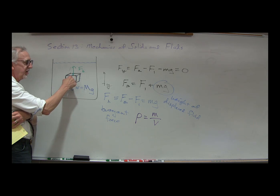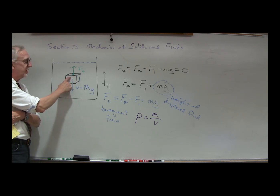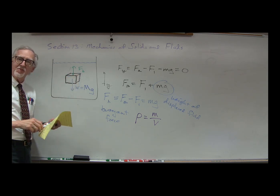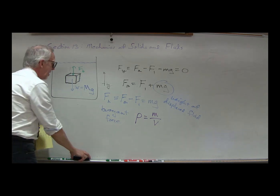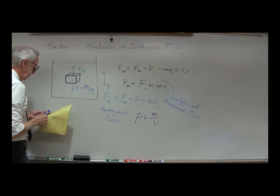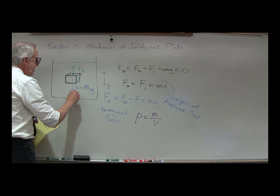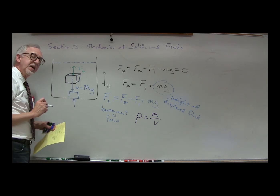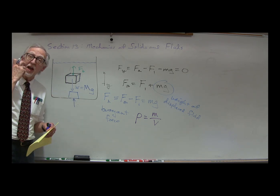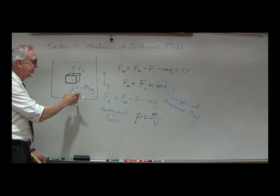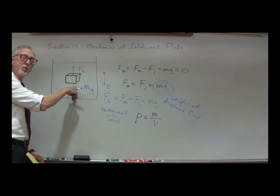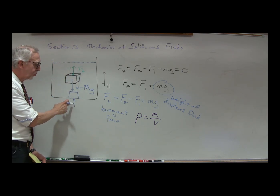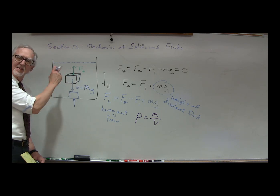If the density of the object is greater, it will go down until it hits the bottom of the container. When it hits the bottom, the container will exert a normal force that balances the difference between the weight of the object and the buoyant force.